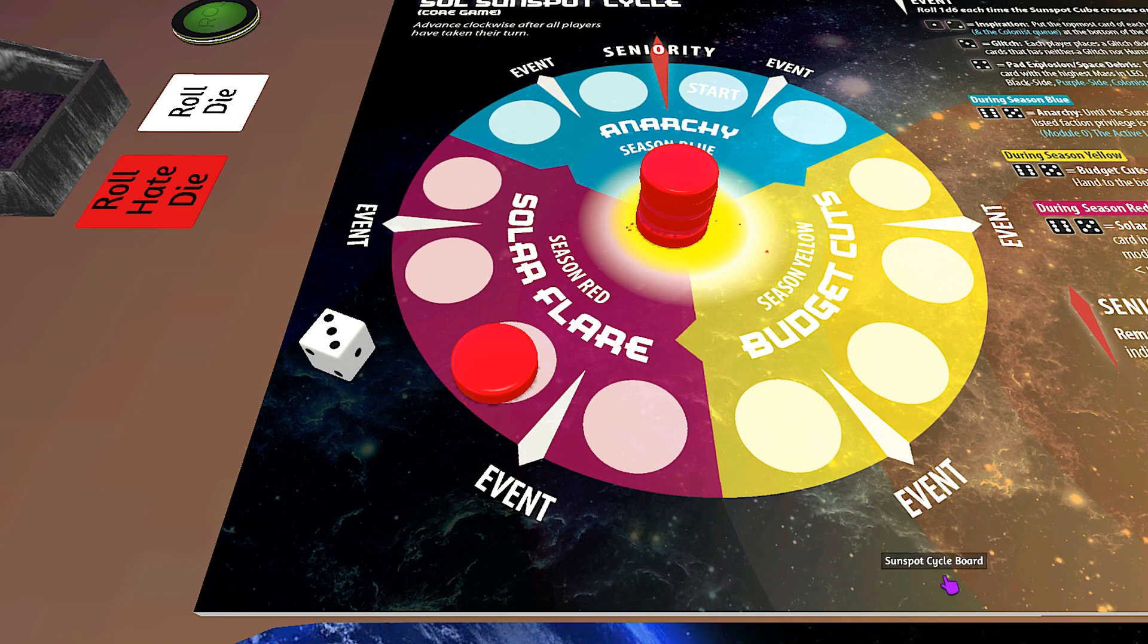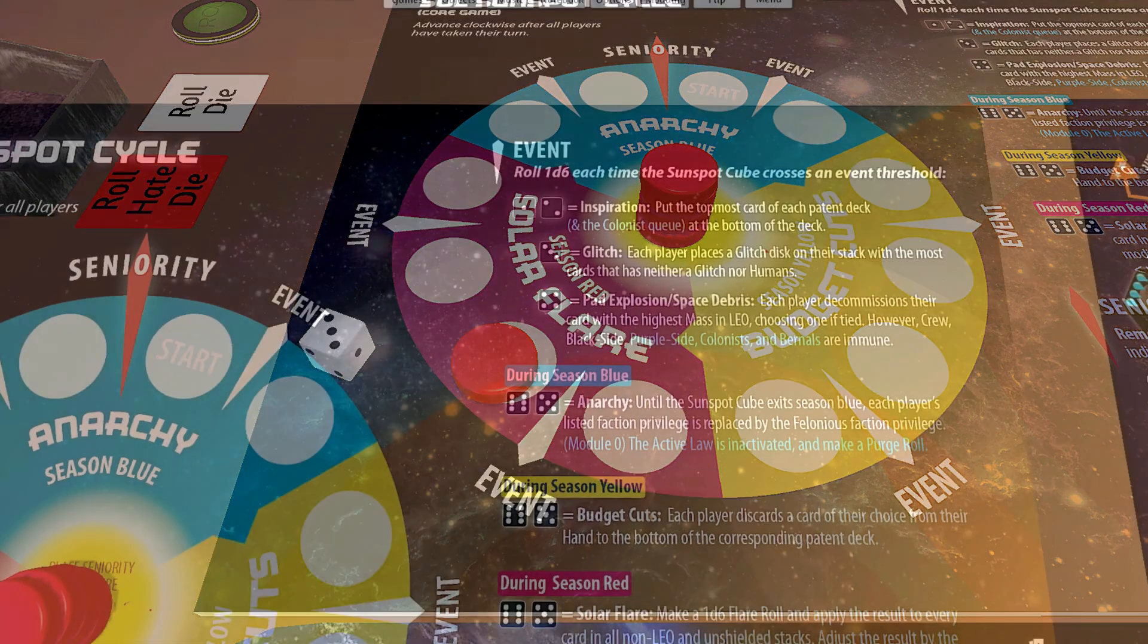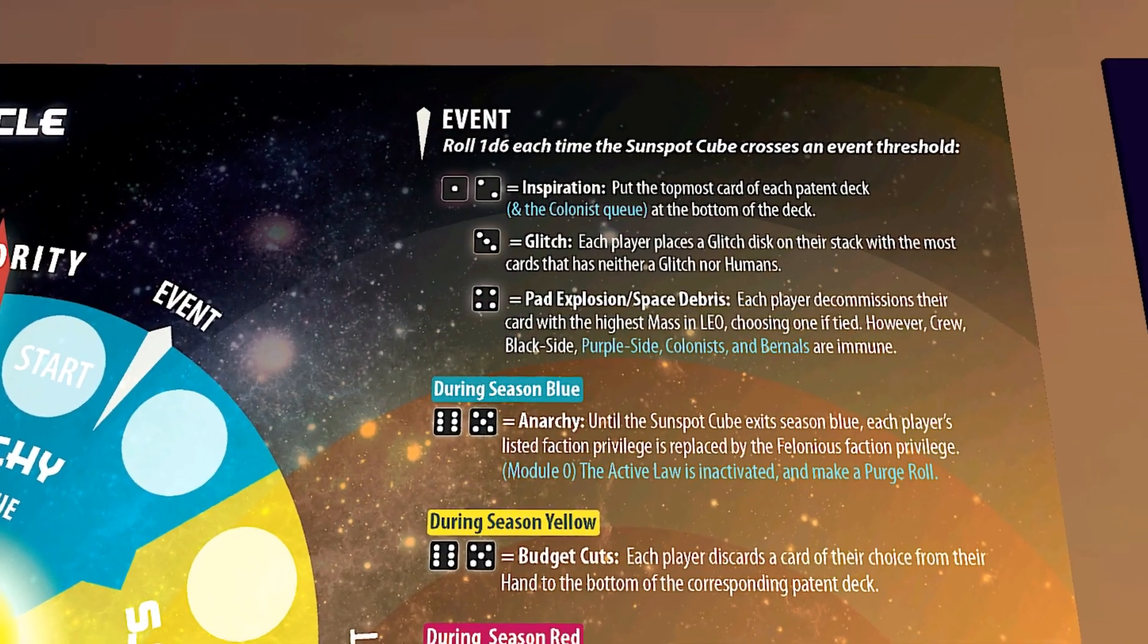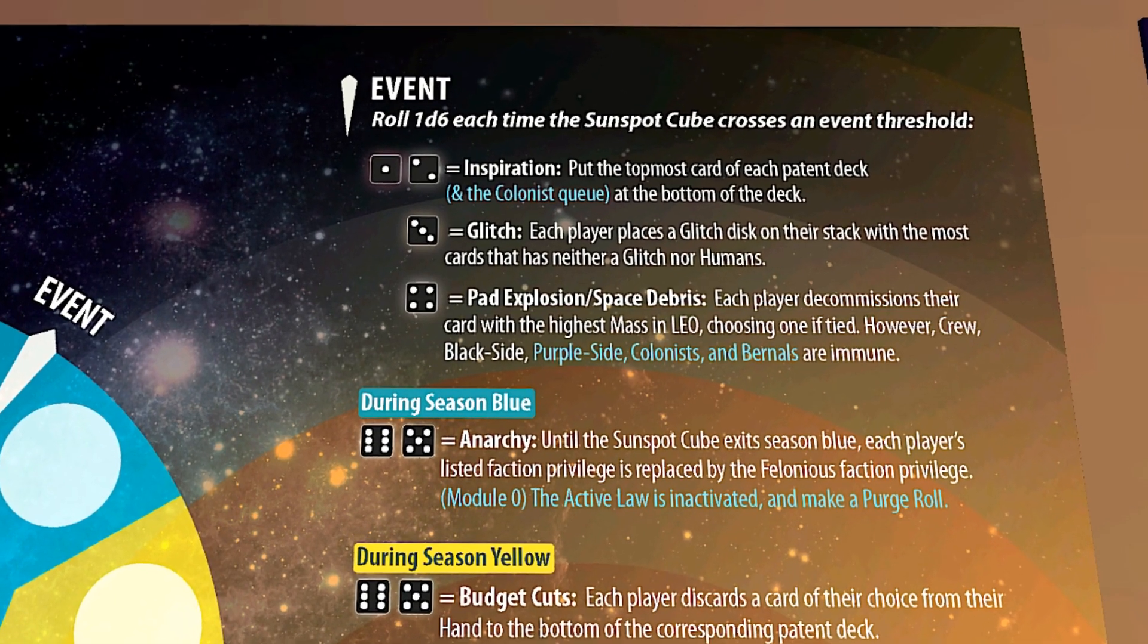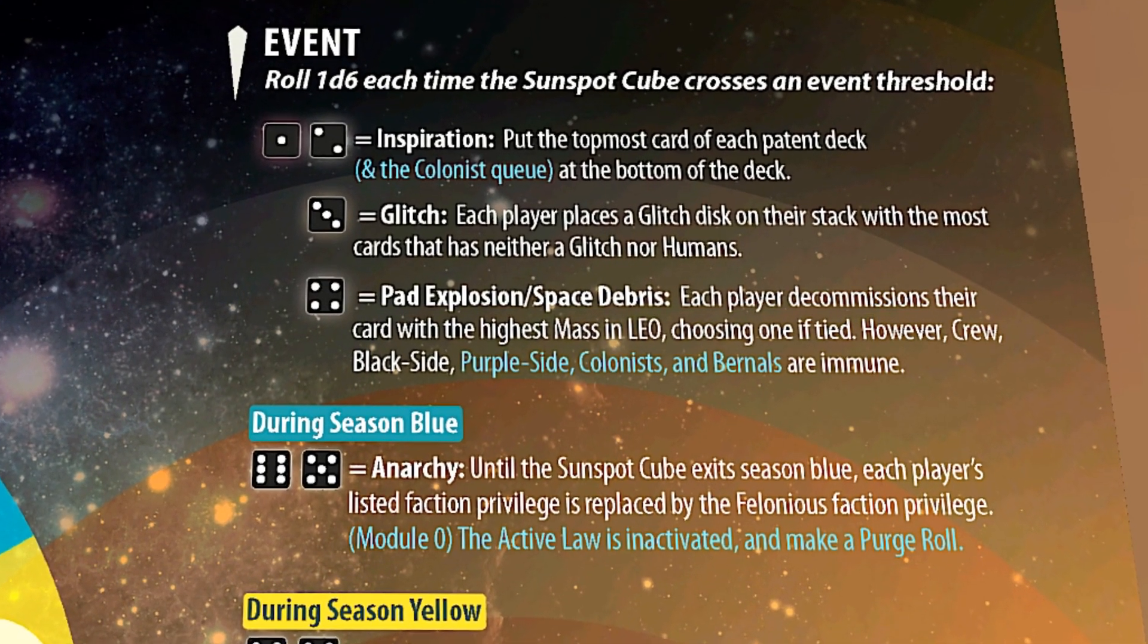As the sunspot cycle advances, triggering the event, I hold my breath and roll a three. I add one to the roll because I am in the heliocentric zone near Venus. A four means pad explosion/space debris where I would decommission a card with the highest mass in low Earth orbit.